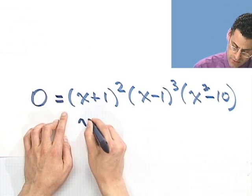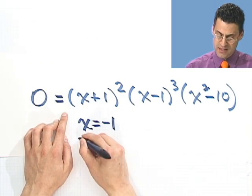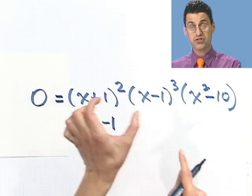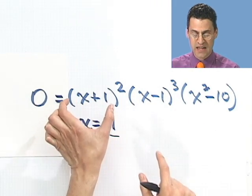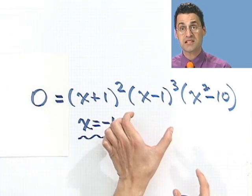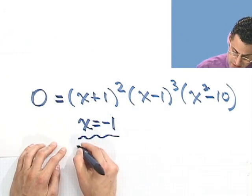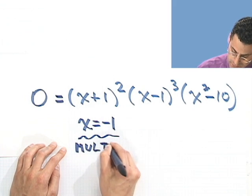So x equals negative 1 is a zero, but it has multiplicity 2. It actually occurs twice. If I were to write this out, I could say x plus 1 times x plus 1. So I see that the minus 1 appears twice. So I say this appears with multiplicity 2.